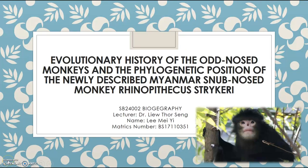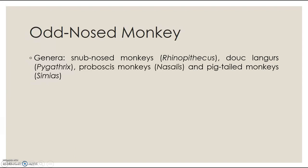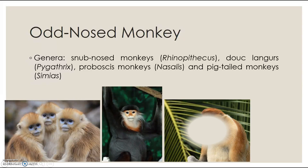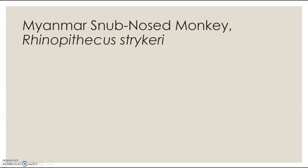Hello. The article title is 'Evolutionary History of the Odd-nosed Monkeys and the Phylogenetic Position of the Newly Described Myanmar Snub-nosed Monkey, Rhinopithecus strykeri.' This article is focused on odd-nosed monkeys, and there are four genera: snub-nosed monkeys, dog langurs, proboscis monkeys, and pigtailed monkeys. They also introduce the newly found species, the Myanmar snub-nosed monkey, and its taxonomy.